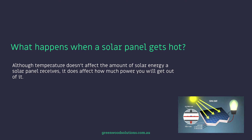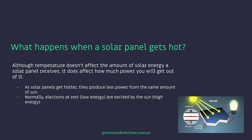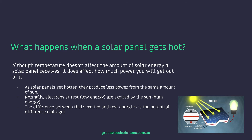Although temperature doesn't affect the amount of solar energy a solar panel receives, it does affect how much power you will get out of it. As solar panels get hotter they produce less power from the same amount of sun. Normally electrons at rest — a low energy situation — are excited by the sun and move into a high energy situation. The difference between their excited and rest energies is the potential difference — the voltage.